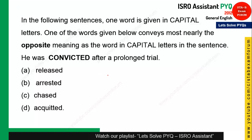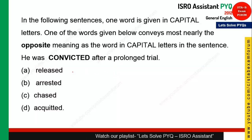The next question is also from one-word substitution. 'He was convicted after a prolonged trial.' The opposite of convicted, meaning he was found not guilty and released, is 'acquitted'. So 'acquitted' is the right answer.